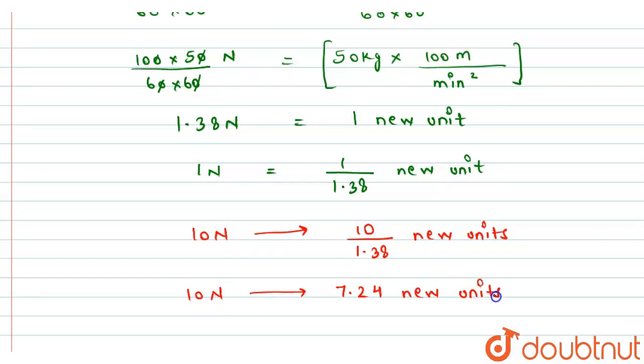And on solving this, we will get, finally, 10 Newtons will be equals to 7.24 New unit. So if I change the system from SI system to the given system in the question, then 10 Newtons will be equals to 7.24 New units. This is the required answer, thank you.